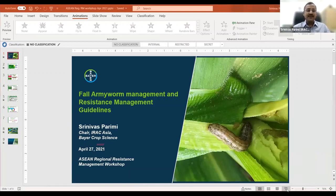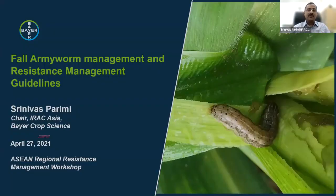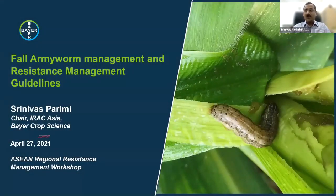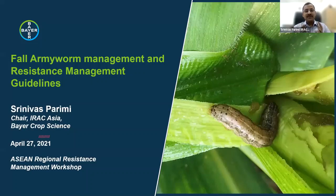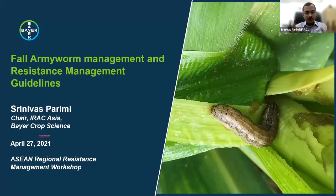Resistance management is a very broad topic. And when you look at fall armyworm, it's even bigger. And we all talk about it a whole lot. But what we can do at the ground level that is practically implementable at the farm level — that's what we need to look at. What I would like to do in this presentation is take through a few of the IRAC recommended guidelines and how we as industry work to support fall armyworm management in any geography, with more specificities towards Asia and the ASEAN region.